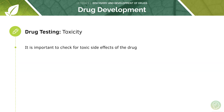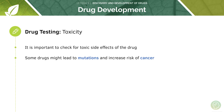The second important thing in drug testing is testing for toxicity. Too much of a drug may cause toxicity, but also the drug in general may be toxic to the human body. It's important to check for toxic side effects. Some drugs might lead to mutations in cells and increase the risk of cancer. We need to check for both short and long-term side effects — not only side effects that present shortly after the drug is taken, but also long-term side effects which might manifest after years or even tens of years.